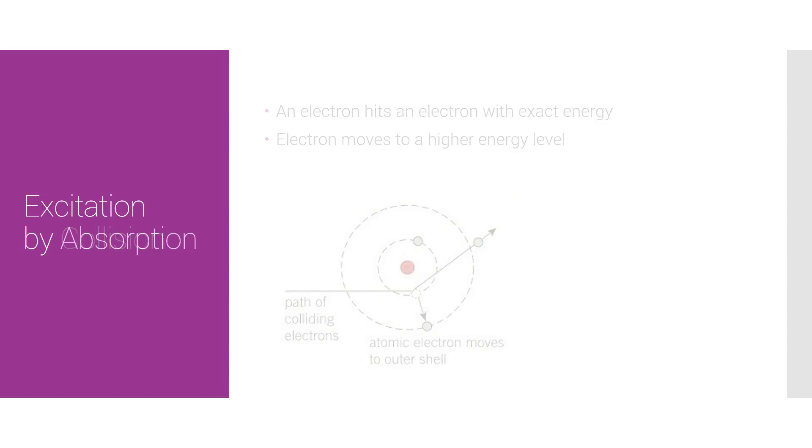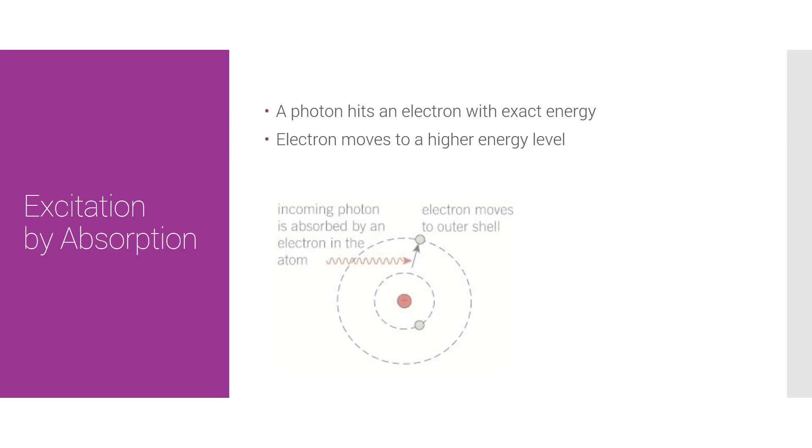Next up is excitation by absorption. Here, instead of being transferred energy by a colliding electron, an electron is excited by instead absorbing energy from a photon. Once again, it has to be exact. But all in all, it's the same principle, really.